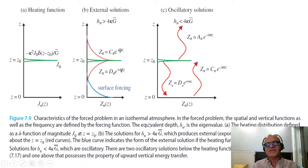So the characteristics of the forced problem in an isothermal atmosphere: the spatial and vertical functions as well as the frequency are defined by the forcing function, so it's not intrinsic. Equivalent depth Hn then is the eigenvalue, the separation coefficient, and the heating distribution here is given this way.